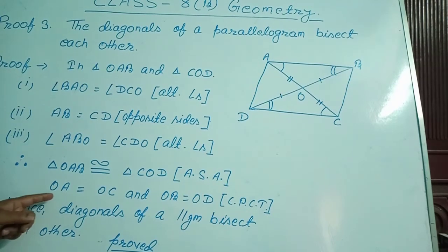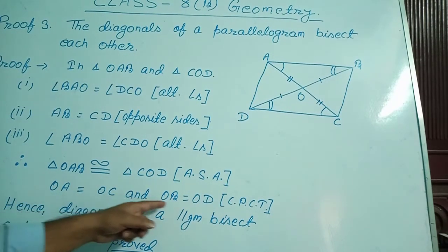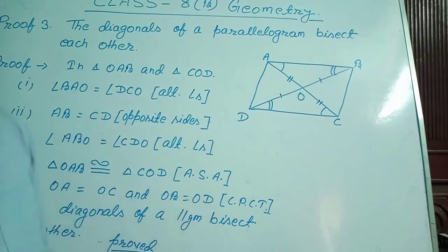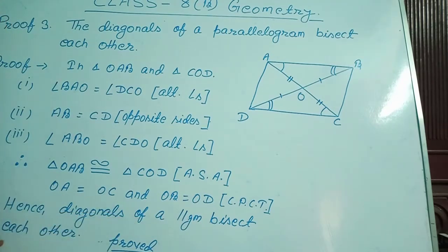Applying CPCT we can say OA equal to OC and OB equal to OD. Hence, diagonals of a parallelogram bisect each other — proved.